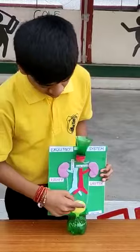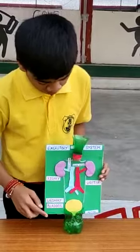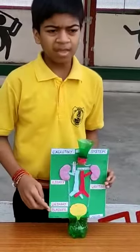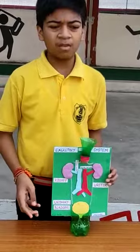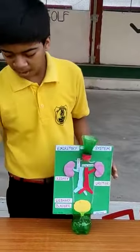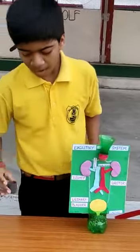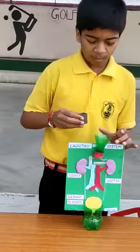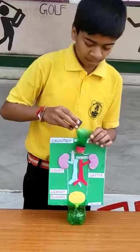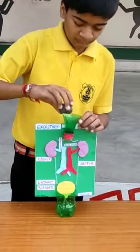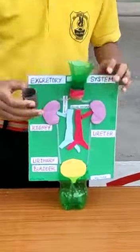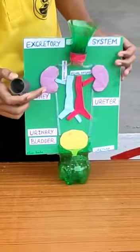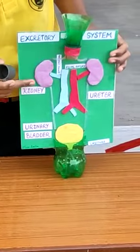The last one is the urethra. The urethra is the passageway through which the urine is passed out. Now I am going to pour some water in here, and after, it is going to reach the kidney.